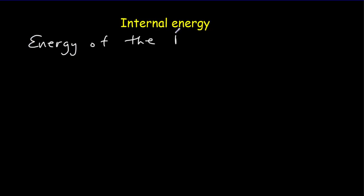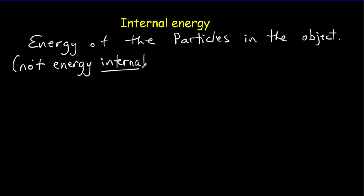Now, we said we were going to talk about three main thermal concepts: temperature, heat, and internal energy. Let's start with internal energy. What do we mean by the internal energy of an object? We simply mean the energy of the particles in that object — meaning either molecules or atoms. Note that this does not include the energy that's internal to the particle itself, such as an electron within the particle shaking around.